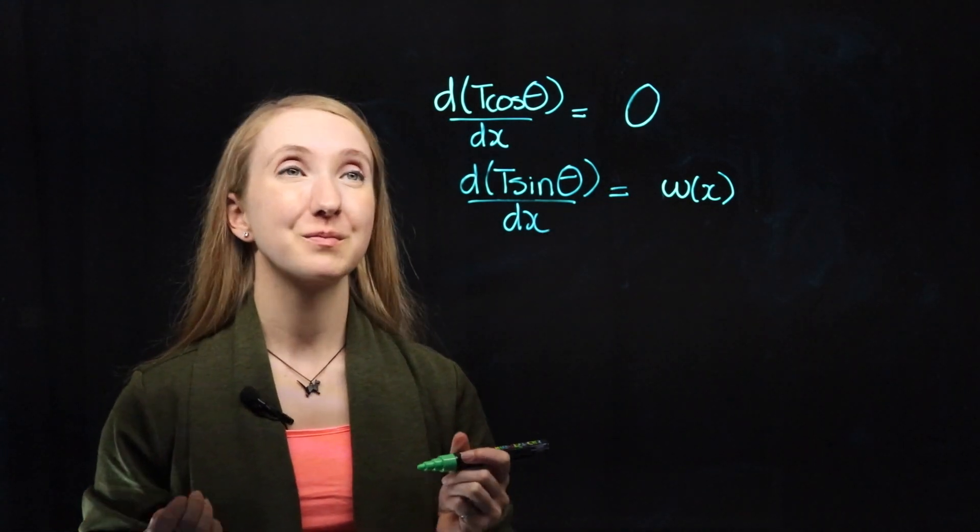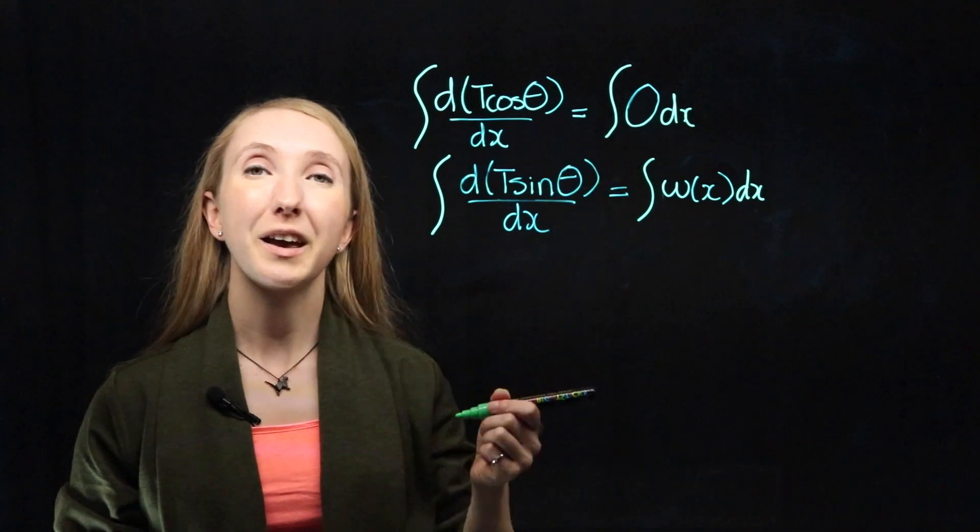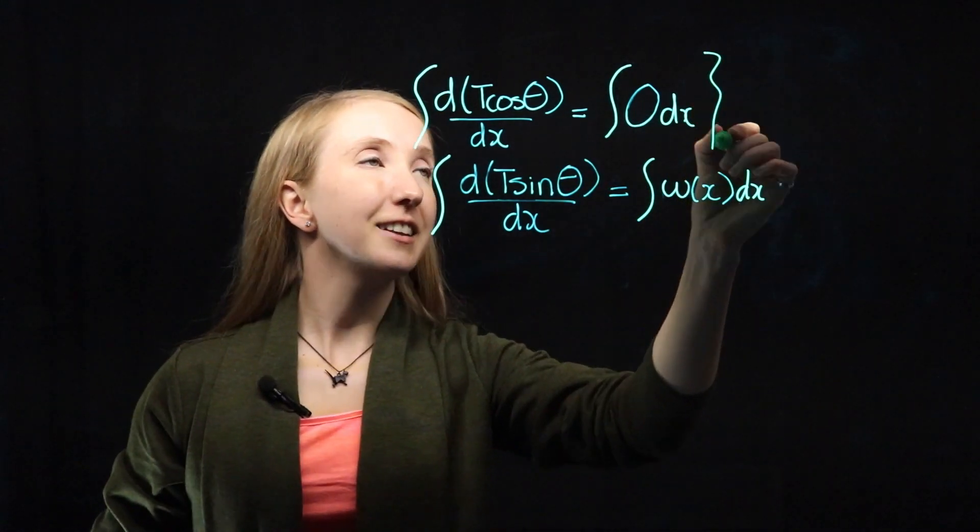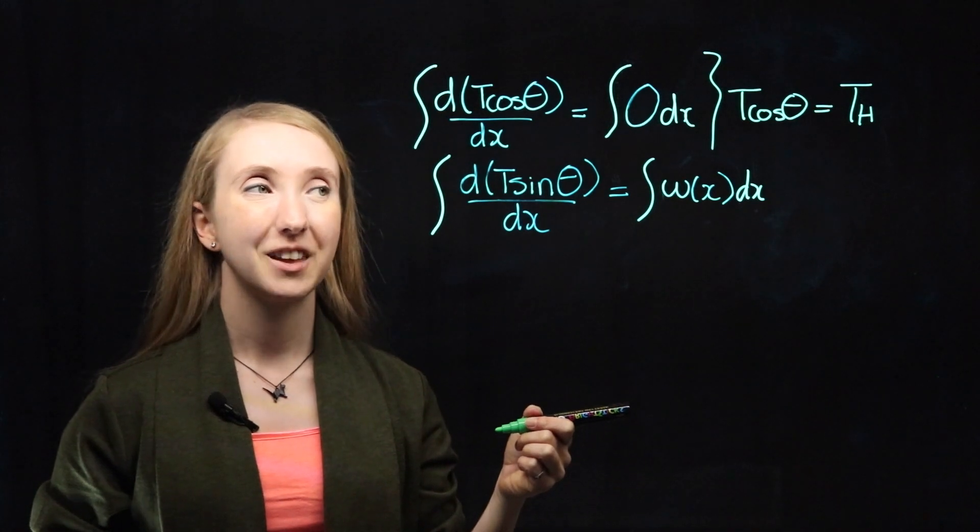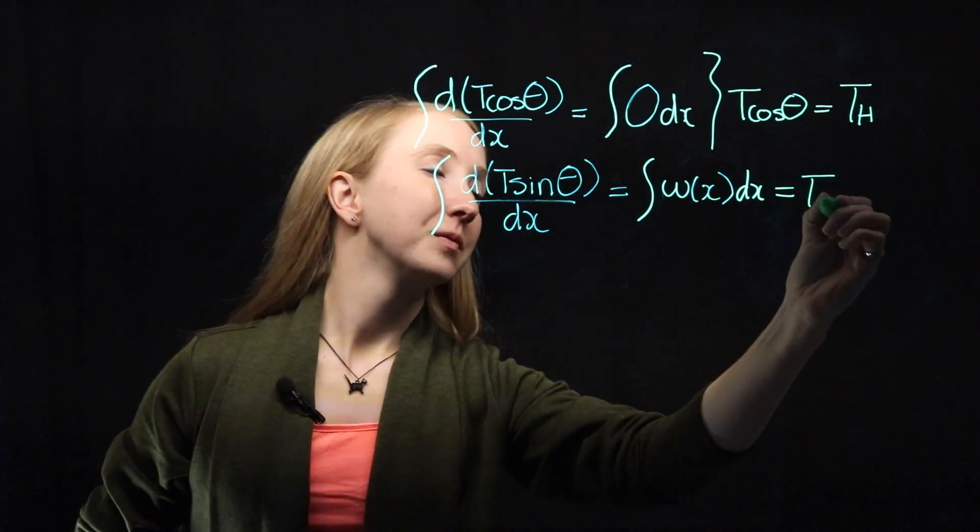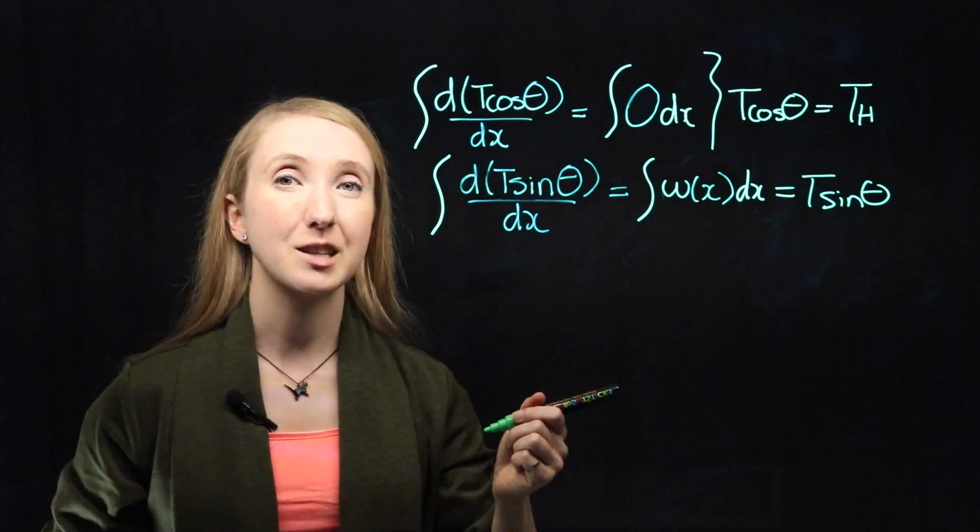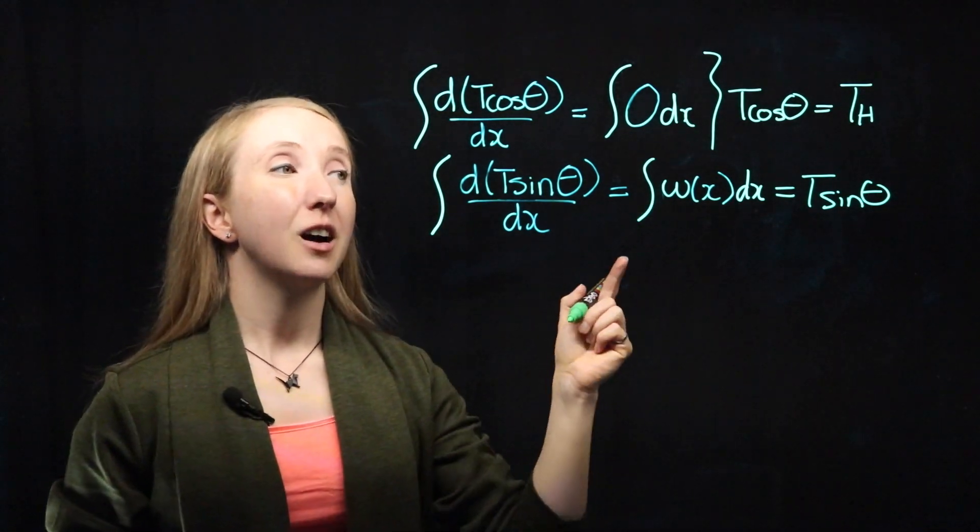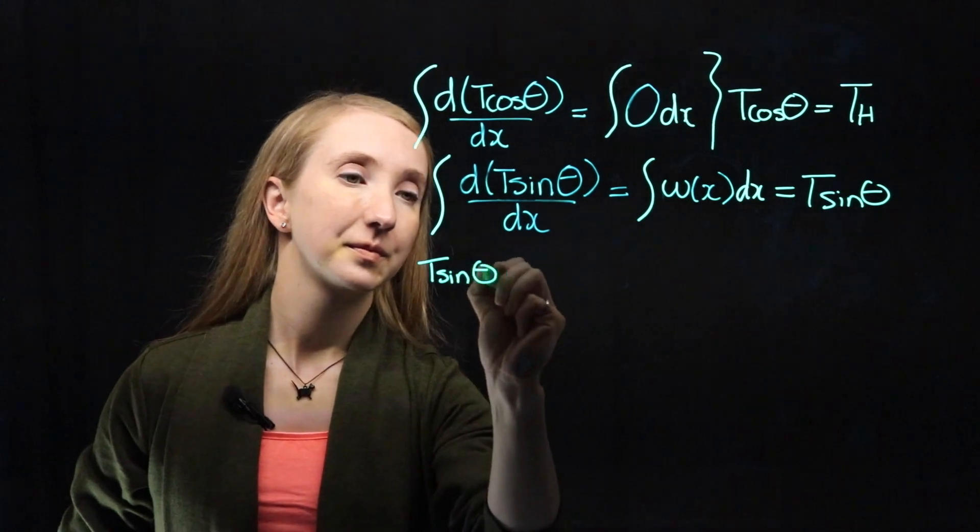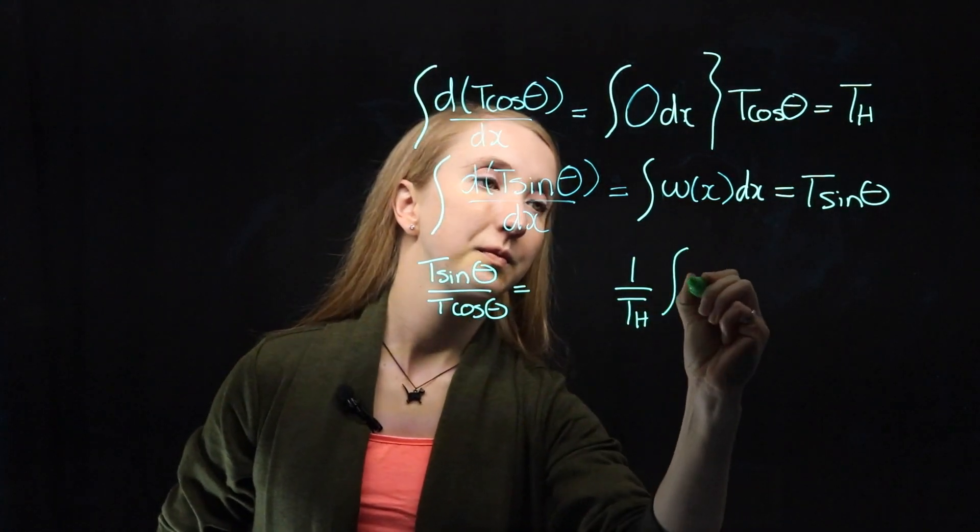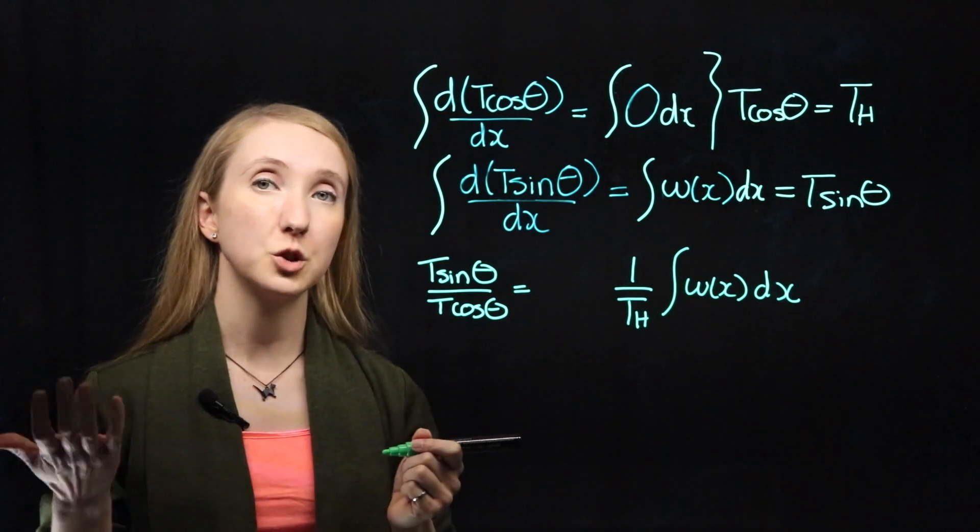These are the simplified expressions from doing equilibrium in our X direction and in our Y direction. We are going to integrate both of them. Remember that when you integrate a zero, you get a constant, which means we get... TH stands for our constant horizontal tension. And in the Y direction... I'm going to leave this in integral form because we don't actually know what our loading function is at this point. Now I want you to take our Y equation and divide it by our X equation.